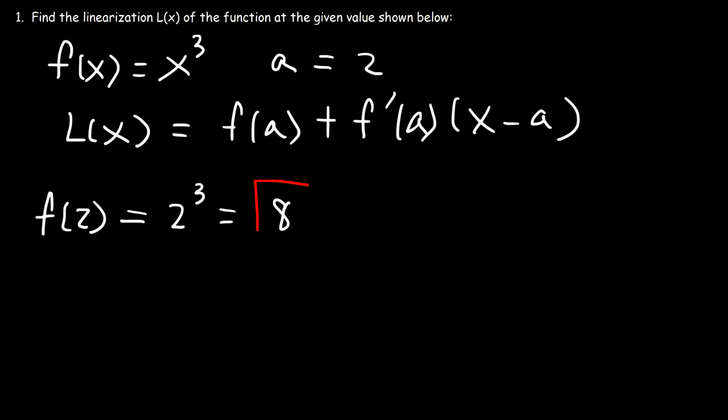Now, we need to calculate f'(a), or f'(2). To do that, we need to find the first derivative. So the derivative of x cubed, using the power rule, is 3x squared. And so f'(2) is going to be 3 times 2 squared. 2 times 2 is 4 times 3. That's 12.